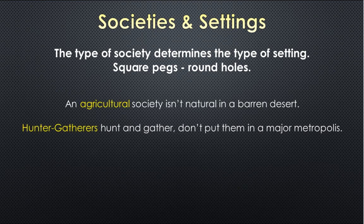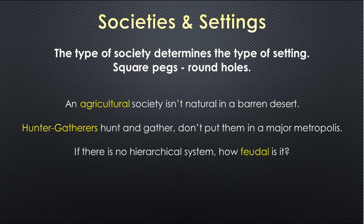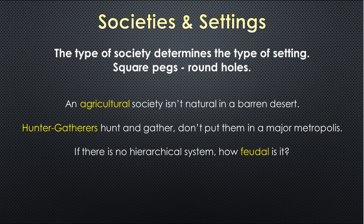The type of society you have determines what kind of setting you need. You can't put a square peg in a round hole. If you have an agricultural society, you shouldn't place it in a completely barren desert with no oasis or water. Agriculture needs a steady flow of water and good soil. If you've got a hunter-gatherer society, you need to put them somewhere they can hunt and gather. It seems obvious, but it's something that could very easily happen — and things like a severe famine, drought, or plague can cause these societies to change.